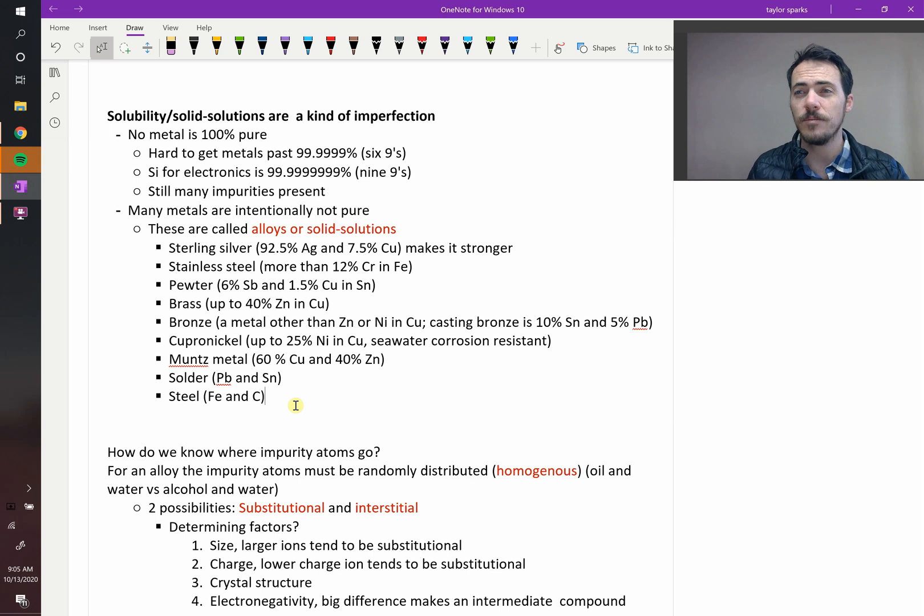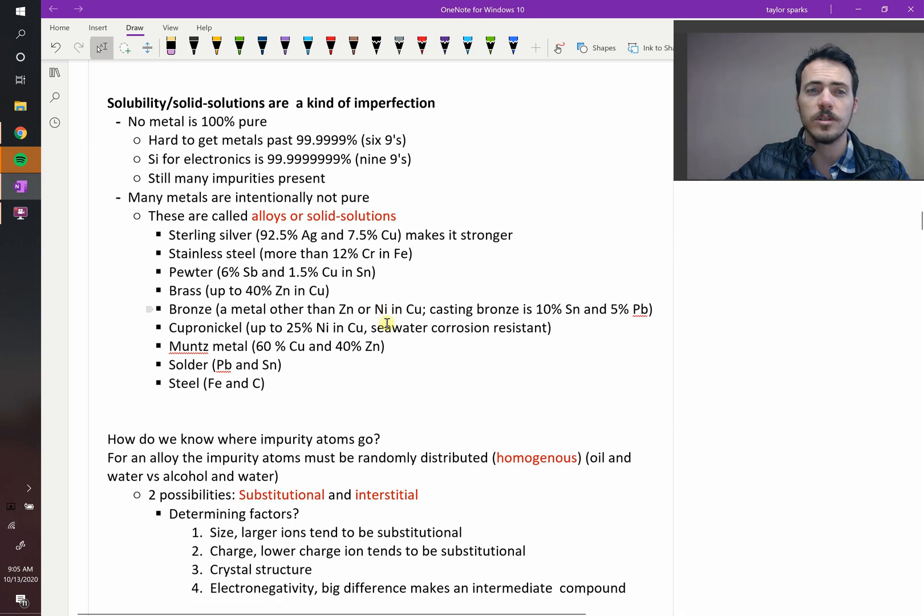But even there, you still have impurities present. Now oftentimes, it's wrong to think we need to get metals as pure as possible, because in reality, we often design alloys to have mixtures of elements. An alloy means that it's not a pure compound, it's been alloyed with another metal. So there's some really famous alloys or solid solutions out there.